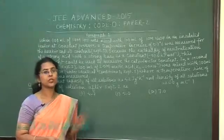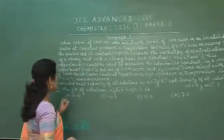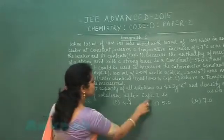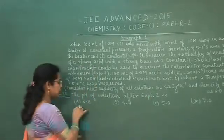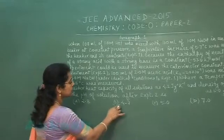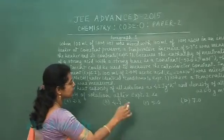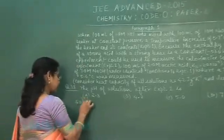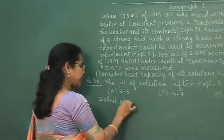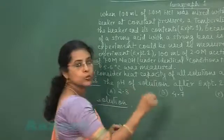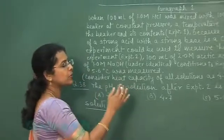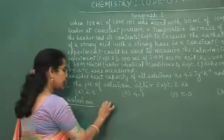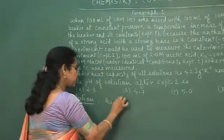Now next question based on this paragraph is question number 38. The pH of solution after experiment 2 is: option A, 2.8; option B, 4.7; option C, 5; option D, 7. Experiment 2. After experiment 2, when a weak acid mixed with a strong base, it will form a buffer solution.